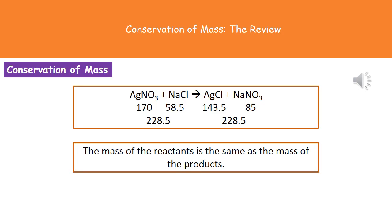To illustrate this point, we've got a little equation here that shows how the masses remain the same. We start off with silver nitrate reacting with sodium chloride to make silver chloride and sodium nitrate. If we work out the relative formula masses: silver nitrate is 170, sodium chloride is 58.5, silver chloride is 143.5, and sodium nitrate is 85. Adding our two reactant masses gives a total of 228.5. Doing the same for our products also gives 228.5, which shows that mass is being conserved.